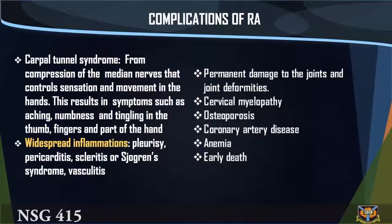Complications of RA: Uncontrolled or poorly treated RA may result in: (31) carpal tunnel syndrome — compression of the median nerve controlling sensation and movement in the hands, resulting in symptoms such as aching, numbness, and tingling in the tongue, fingers, and part of the hand. (32) Widespread inflammation.